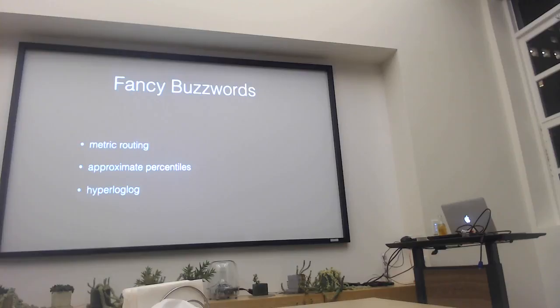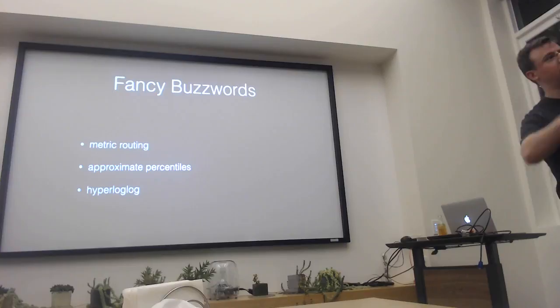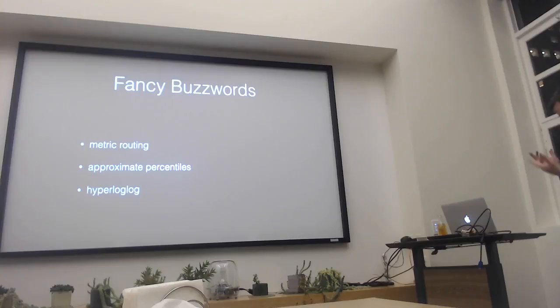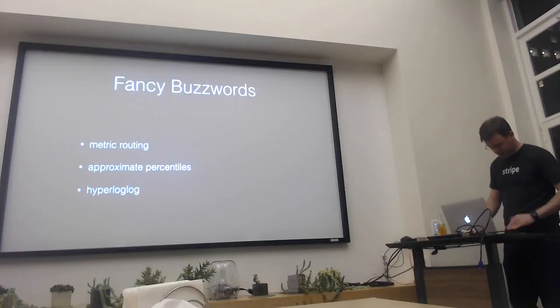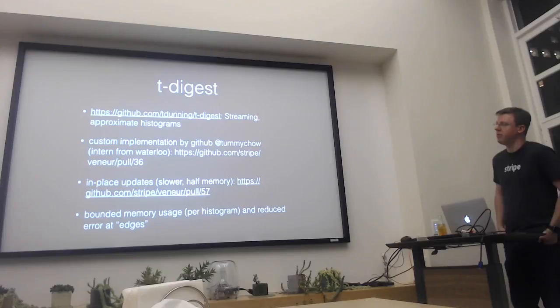Some fancy buzzwords: metric routing and how it moves things around itself and its minions. Approximate streaming percentiles — if you're playing buzzword bingo tonight, you can check HyperLogLog off. Part of why I did this project was to get to say I have used HyperLogLog in production. The first implementation was the other one — reservoir sampling — that I'm going to forget the name of. It figures I'm being recorded and I can't remember the name. We'll come back to it when I remember.